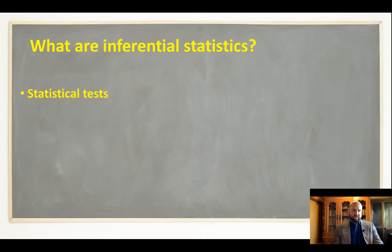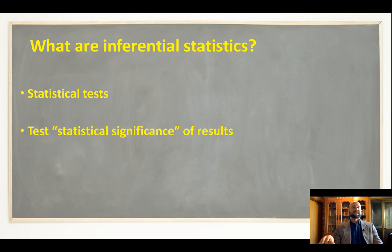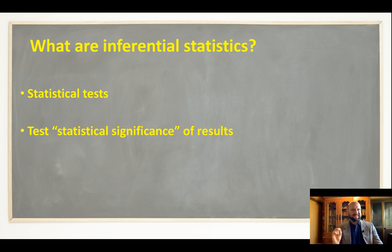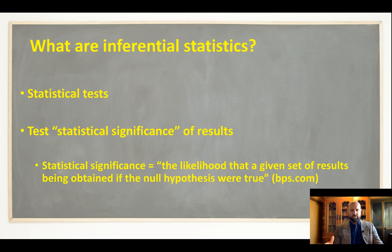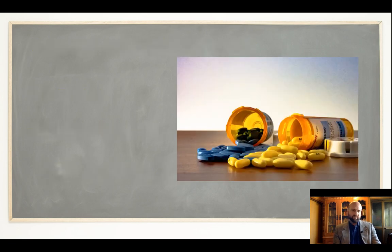So what are inferential statistics? They are statistical tests that are testing for the statistical significance of the results. In this case, are my results of 70% versus 60% statistically significant? Statistical significance — and this is a quote from the BPS, I'll put a link to a good article in the description — is the likelihood that a given set of results would be obtained if the null hypothesis were true. Let's come back to my Remembrol example.